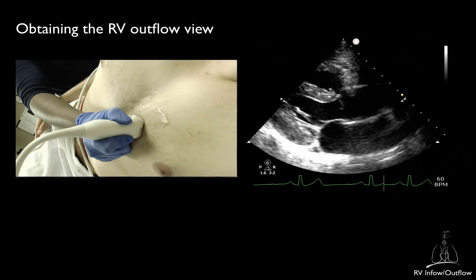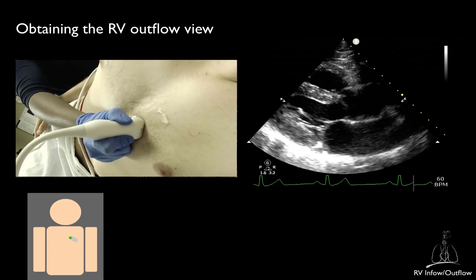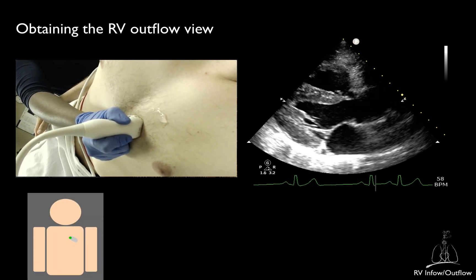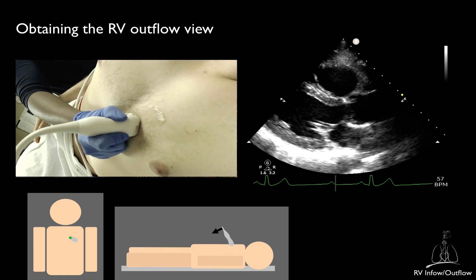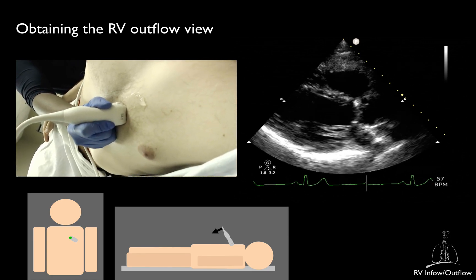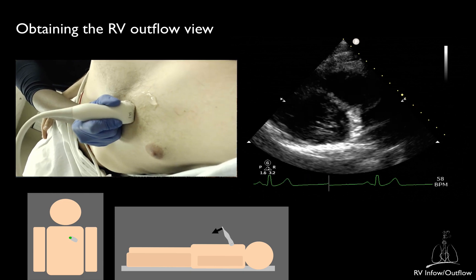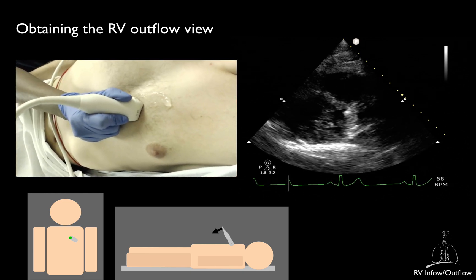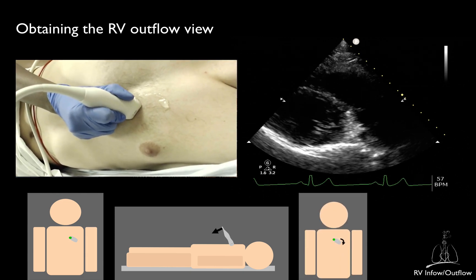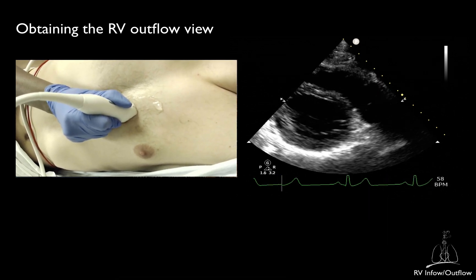To obtain the right ventricular outflow view, go back to the parasternal long axis view and then continue to tilt the transducer tail downward — that is, direct the ultrasound beam upward. Sometimes, a slight clockwise rotation of the transducer may help in better identifying the right ventricular outflow tract.